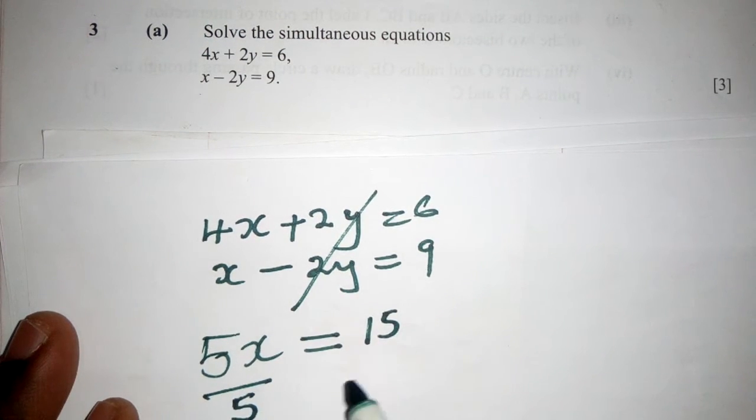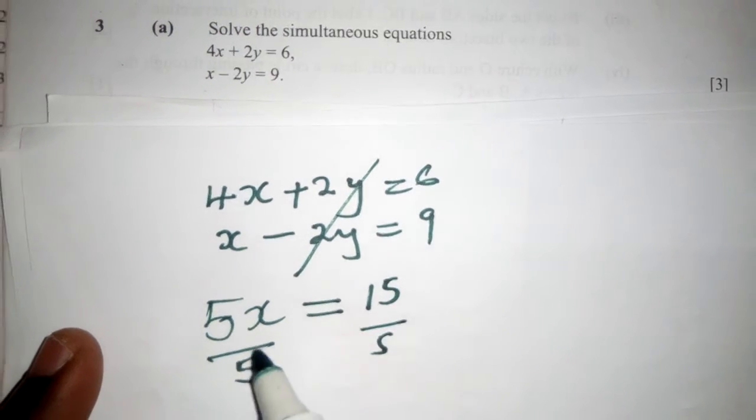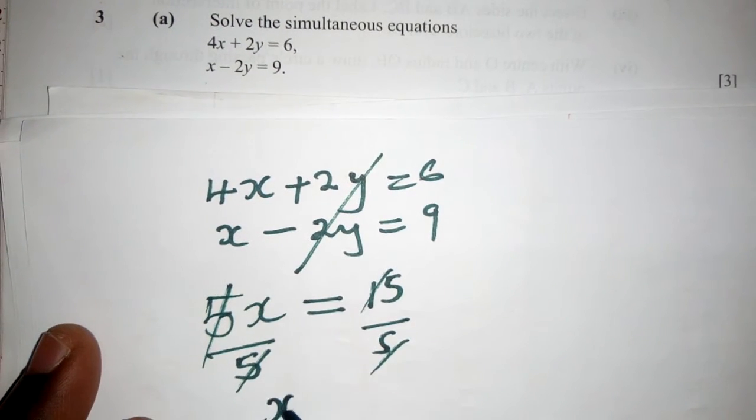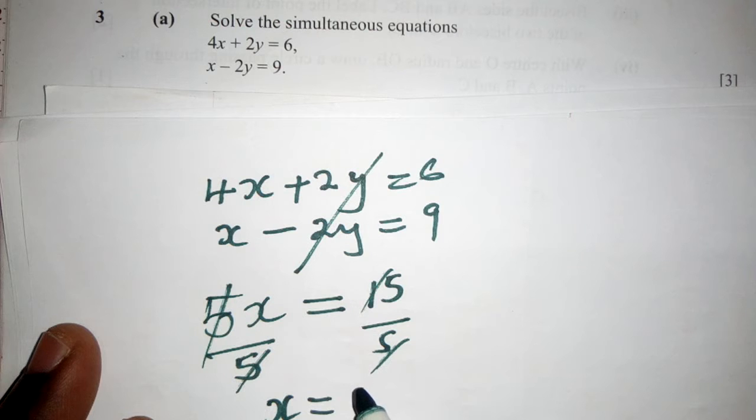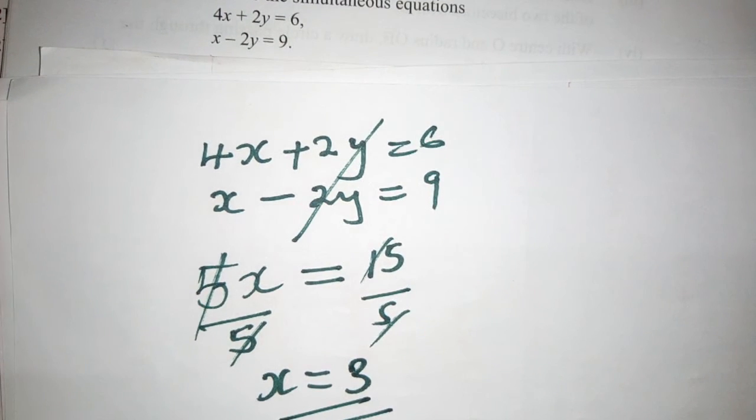We divide by 5, divide by 5, and then the value of x is what here is 3. So the value of x is 3.